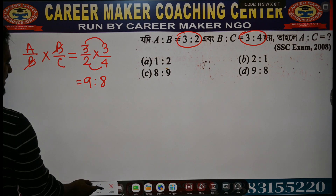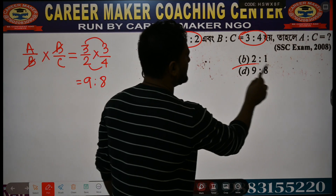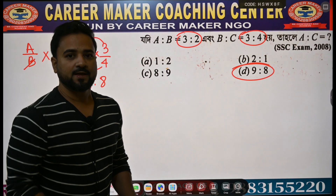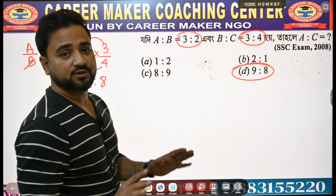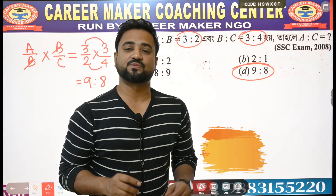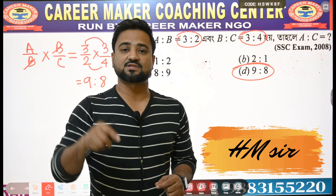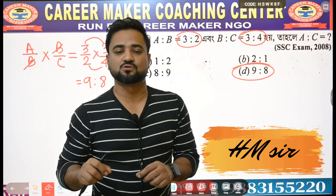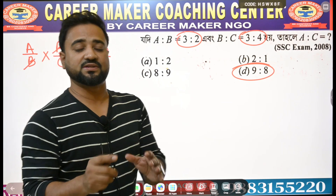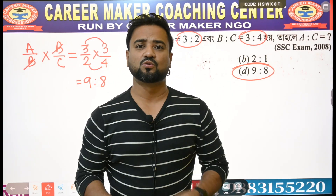So the answer is 9 is to 8. If you need to use this, it's very simple. If you use A to B to C, then you can use a matrix process. This is the last step — make the direct one step.